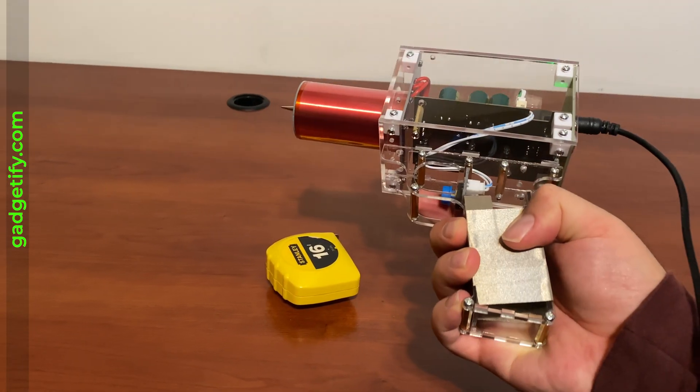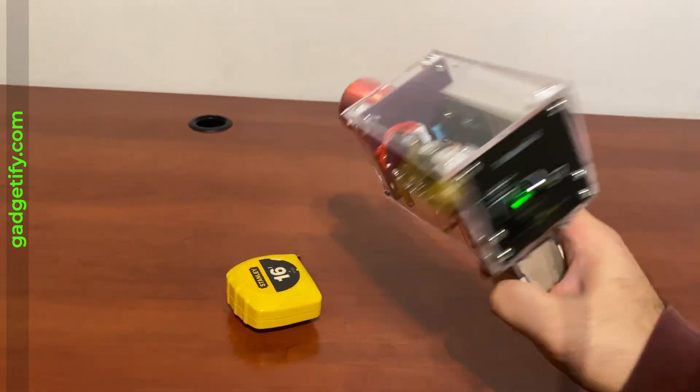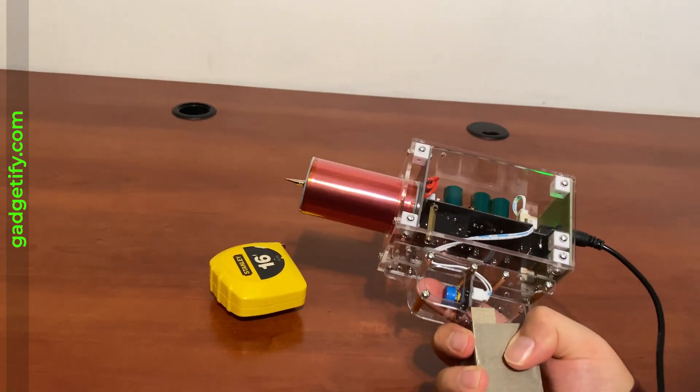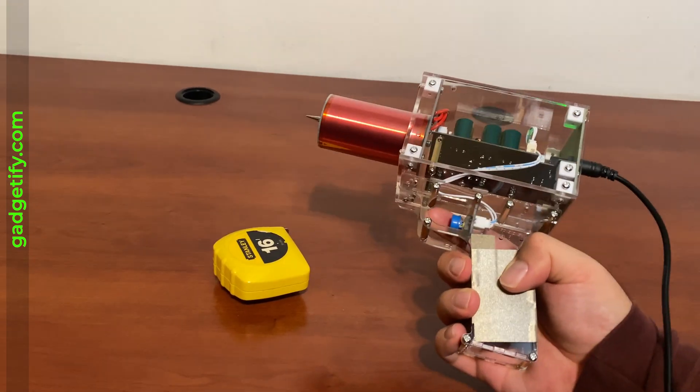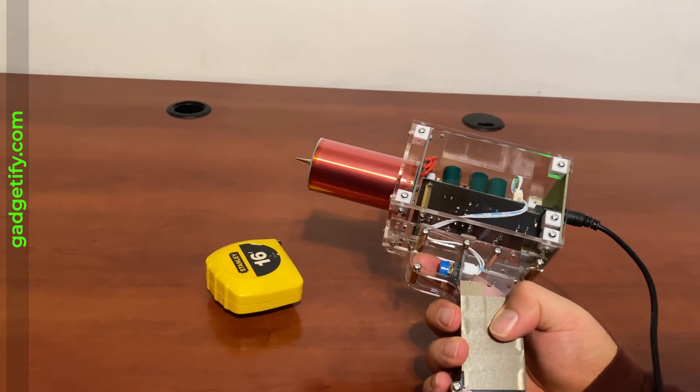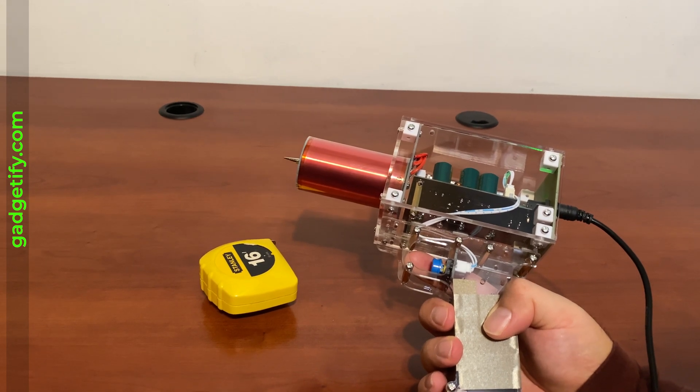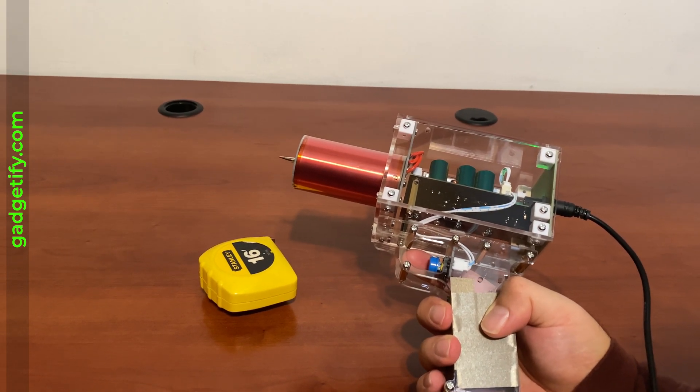So that's about it. This is a spark gun handheld Tesla coil that you can use for experiments, classroom, or just shoot lightnings and anything that you like. For more gadgets like this, let's go to gadgetify.com and also our channel on youtube.com at gadgetify. Thanks for watching.